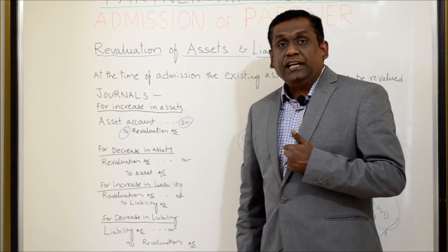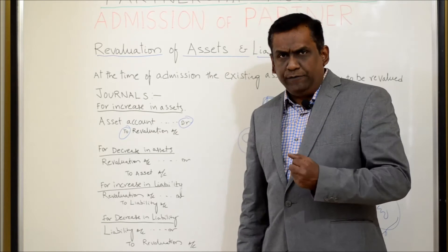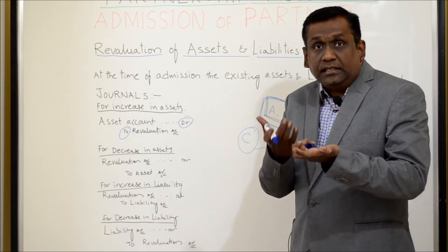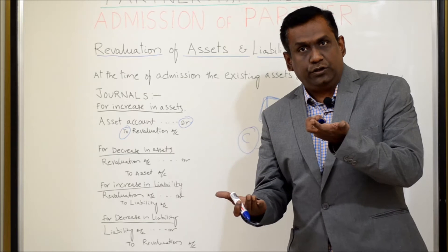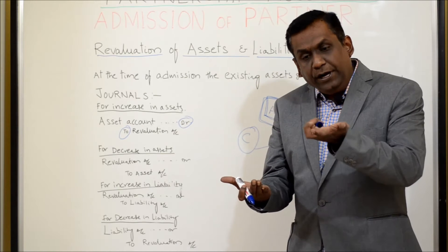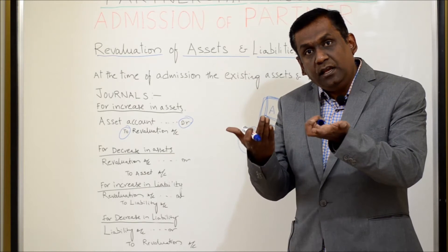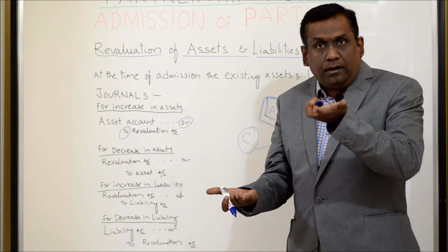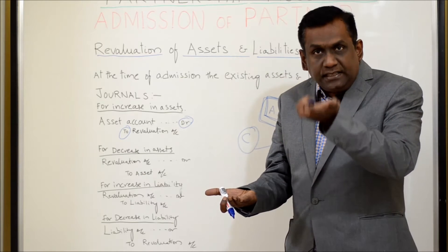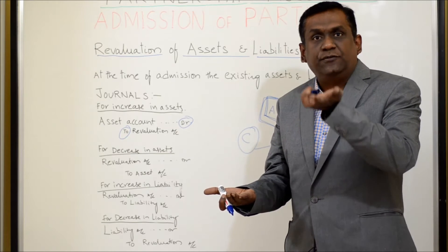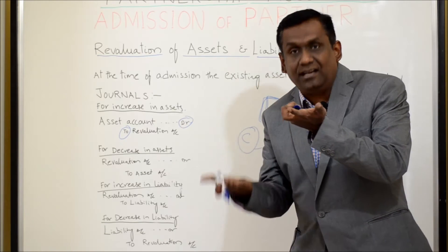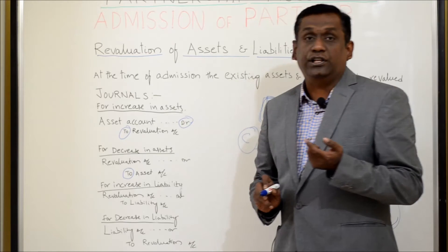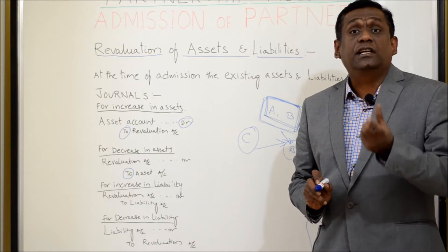Next, for decrease in asset. As I said, asset is a debit balance, but the asset value has come down — reduced. If you want to reduce the asset value, since asset is a debit balance, you need to credit it. That is the reason you credit the asset account in the case of a decrease.